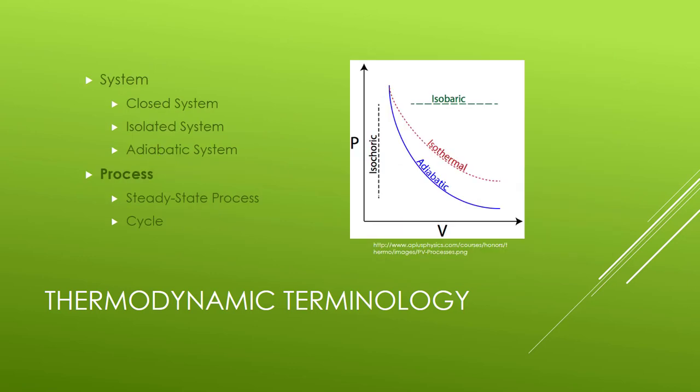So let's talk next about processes. A system has material in it, and at a particular point in time, there are properties that define that system in its state. But if I allow things to change, that process of changing is what we will call a thermodynamic process. In the diagram here, I've got several different key types of processes that you should be familiar with.